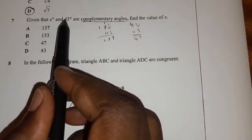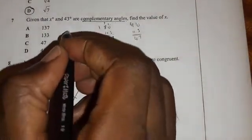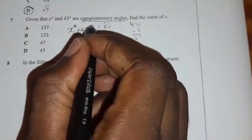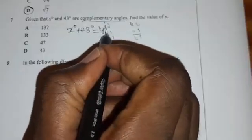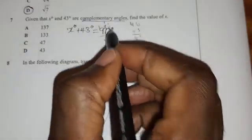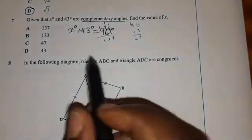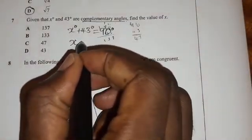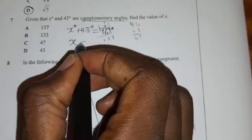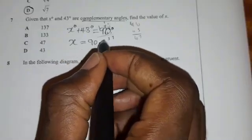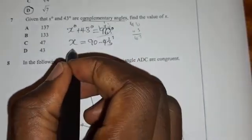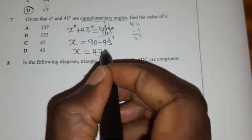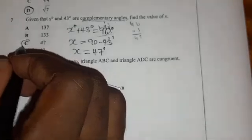So when you add this and this, you should get 90 degrees. So what you are saying is X degrees plus 43 degrees, you should get 90 degrees. That's what it means when they say complementary. When you add these two, you should get 90. So to solve for X, you are going to take this to the other side. Then you have X is equal to 90 minus 43, which gives X as 47 degrees. So meaning C is the answer.